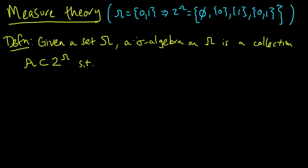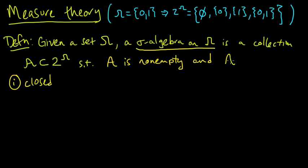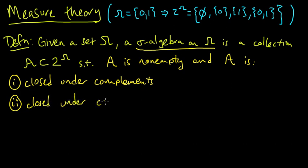So back to the definition, a sigma algebra on omega is a collection of subsets of omega, such that A is non-empty, that's just a technical condition, and two important conditions: one, it's closed, A is closed under complements, and two, it's closed under countable unions.